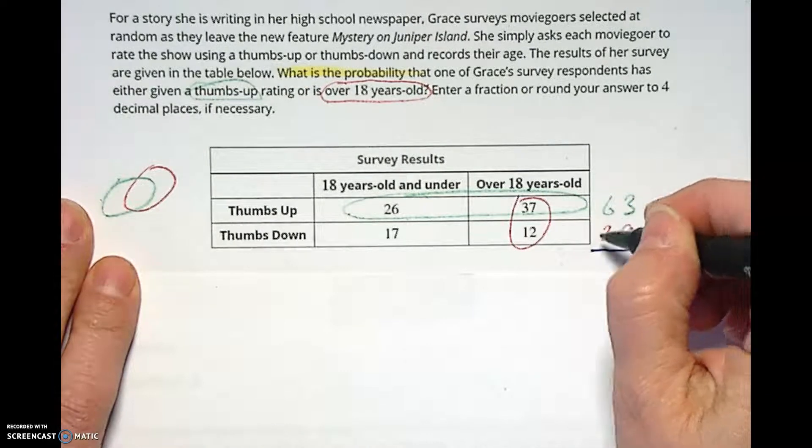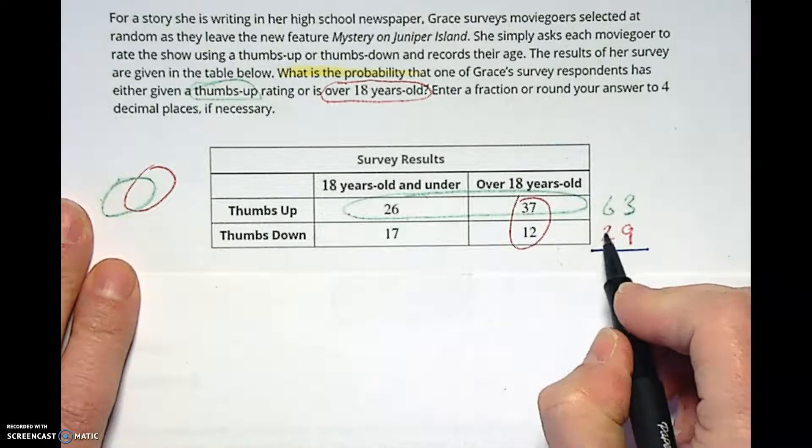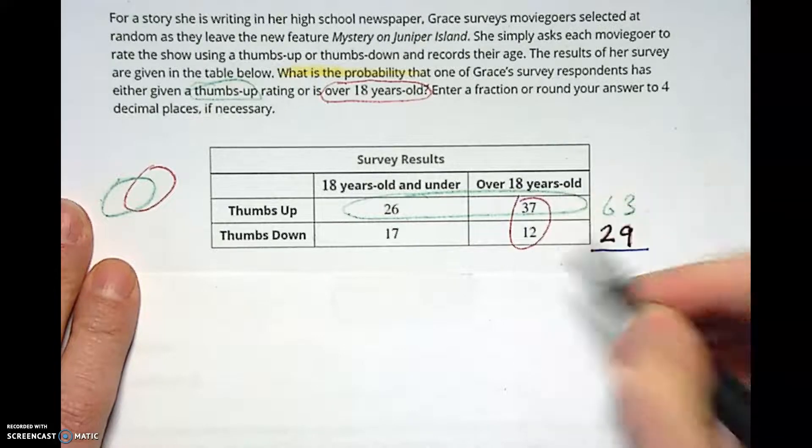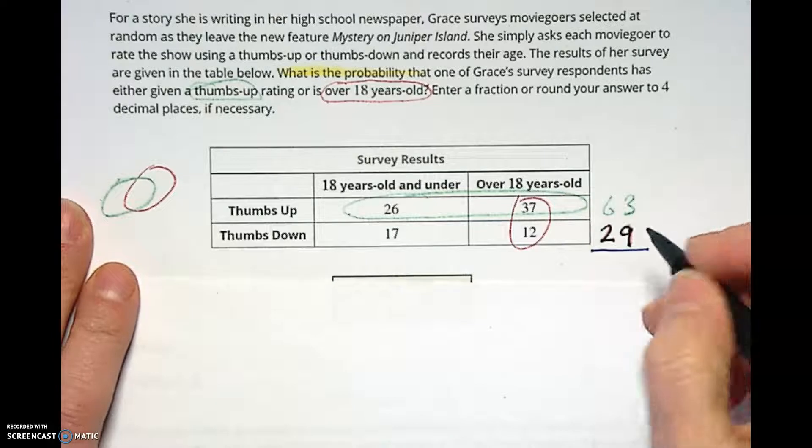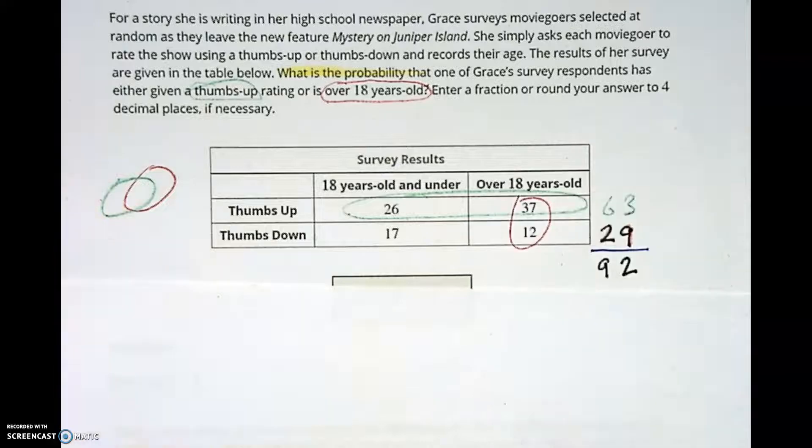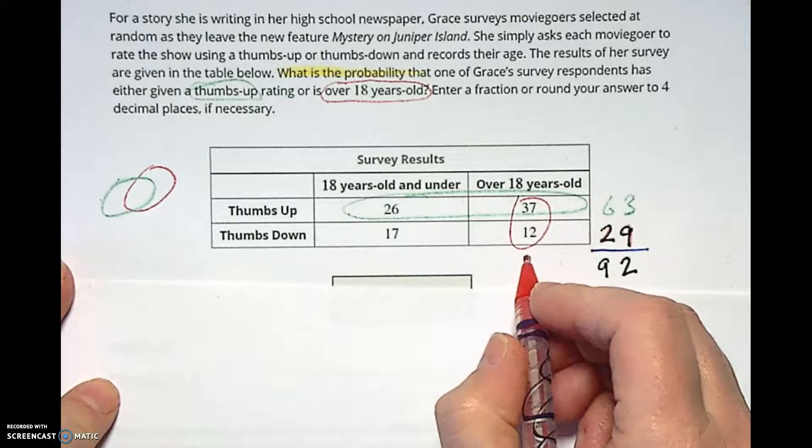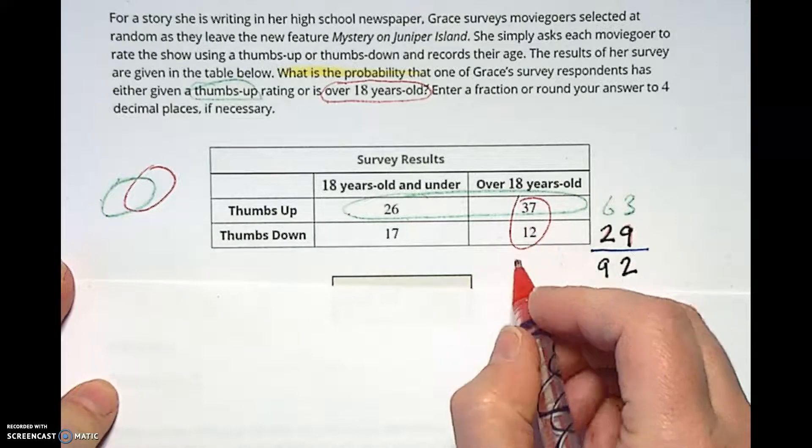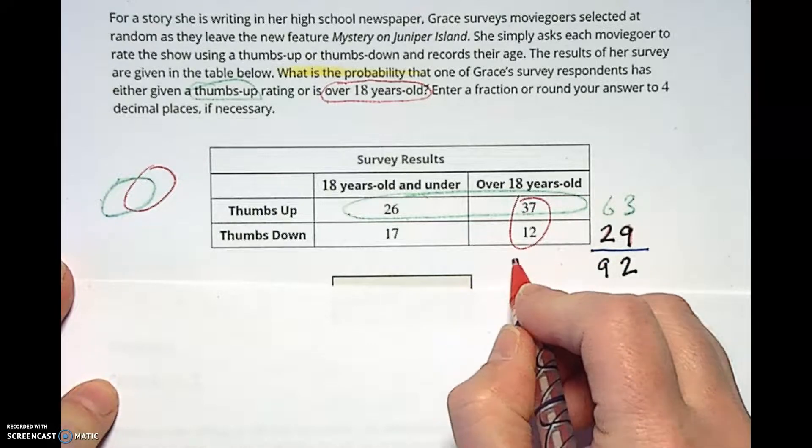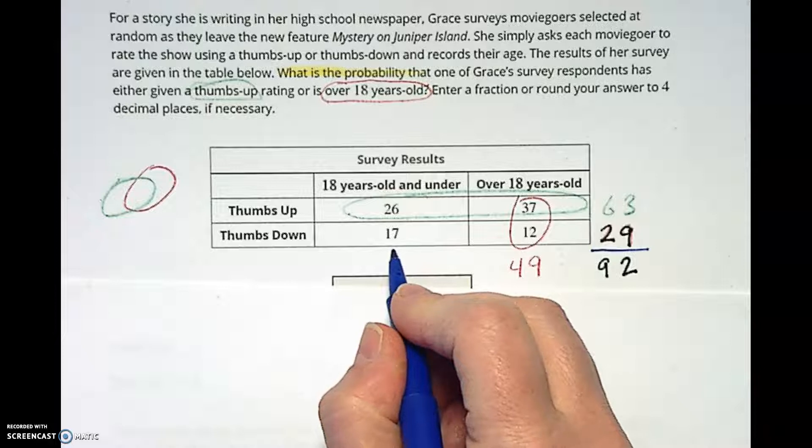Which means by doing that we end up getting our total. So we've got 63 thumbs up people and 29 thumbs down people, which gives us 92 total people. And since I did that, I'm going to go ahead and get the over 18 people. So over 18 was 37 plus 12, which is 49. And the 18 years and under, 26 and 17 is 43.